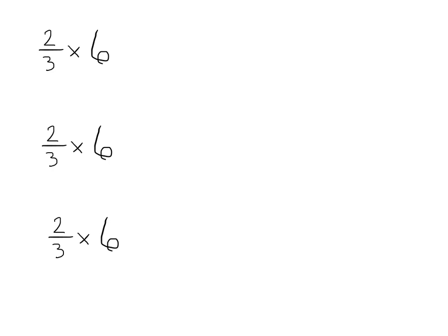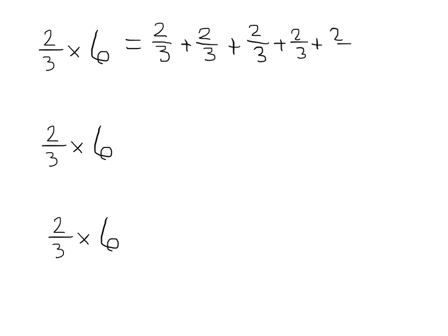Starting off with 2/3 times 6, and we're going to solve this same problem three different times. We're going to start by thinking of it as addition — adding 2/3 six times: 2/3 plus 2/3 plus 2/3 plus 2/3 plus 2/3 plus 2/3. Now we add up the numerators: 2 plus 2 plus 2 plus 2 plus 2 plus 2 — that's like skip counting: 2, 4, 6, 8, 10, 12. So we have 12/3, which equals 4, because 12 divided by 3 is 4.